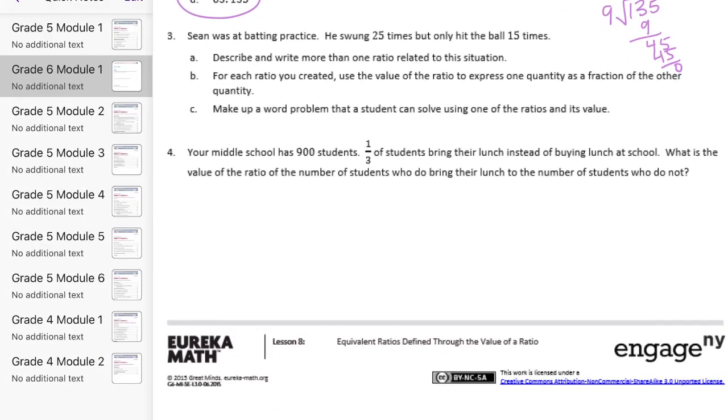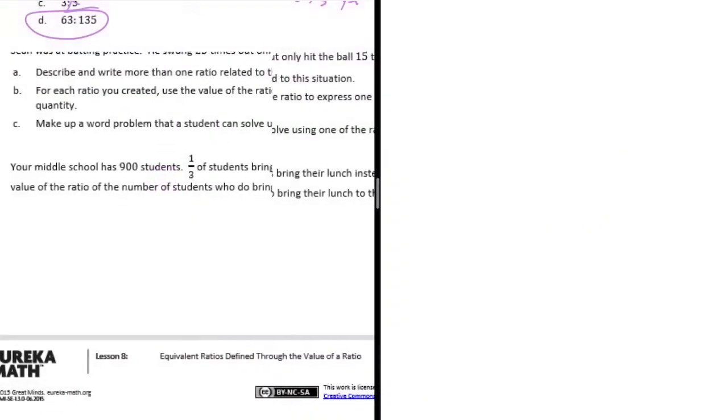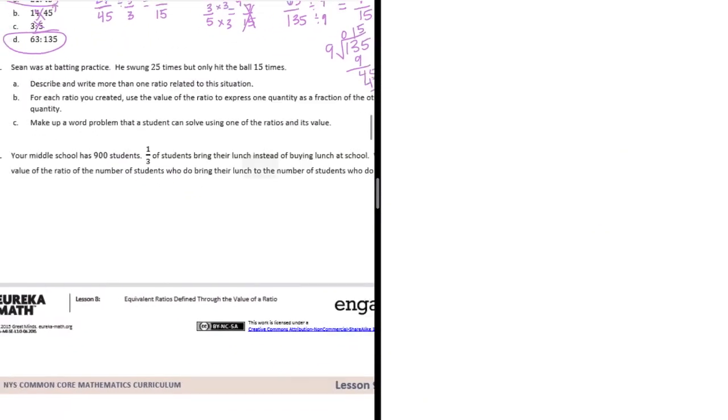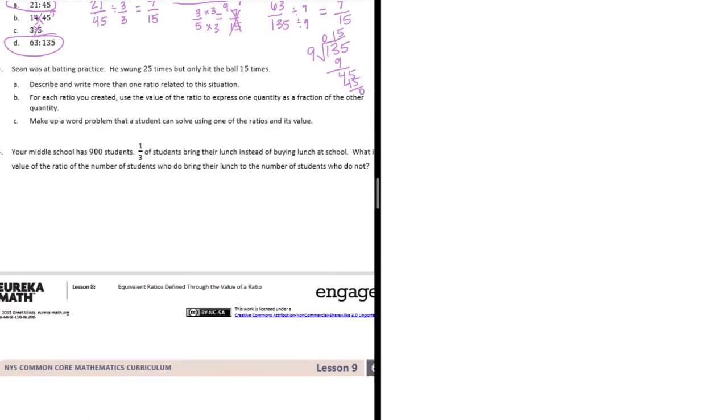Number 3. Sean was at batting practice. He swung 25 times but only hit the ball 15 times. A. Describe and write more than one ratio related to this situation. We need more space. Okay, so A. We need to write more than one ratio related to this situation. So let's write 2 or 3.